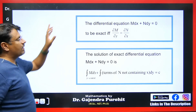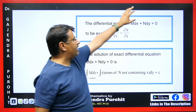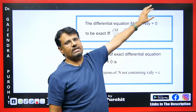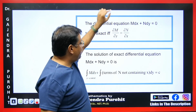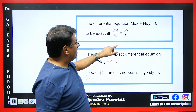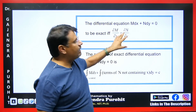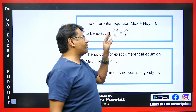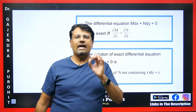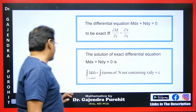If a differential equation is given where we have M dx plus N dy equal to 0, and del M by del y is equal to del N by del x, such an equation is known as an exact equation.